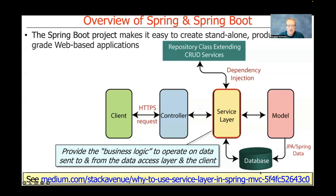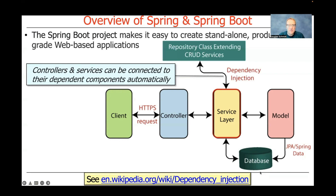The service layer is where the business logic operates on data sent to and received from the data access layer on the server side. The bulk of the real code we write — using concurrency techniques, reactive programming, functional programming, and object-oriented programming — resides in the service layer. Controllers typically depend on services to do their bidding, and they're connected automatically using dependency injection.